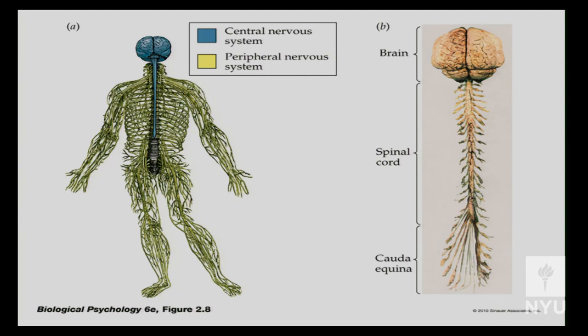These nerves carry sensory information into the central nervous system and motor information out. By nerves, we mean axons — the output of neurons. All of the nerves we're talking about in the peripheral nervous system are really defined as axons. The peripheral nervous system includes spinal nerves, cranial nerves, and the autonomic nervous system.